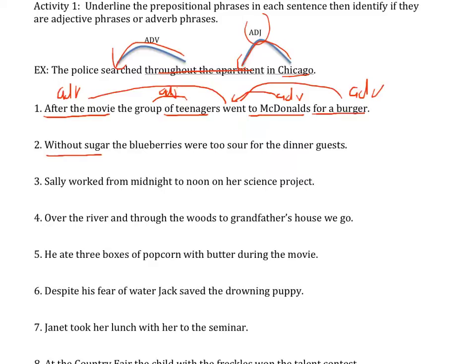Next: Without sugar, the blueberries were too sour for the dinner guests. 'Without sugar' is modifying 'blueberries' — adjective. 'Were too sour for the dinner' — adverb. So again: adjective, adverb phrase.